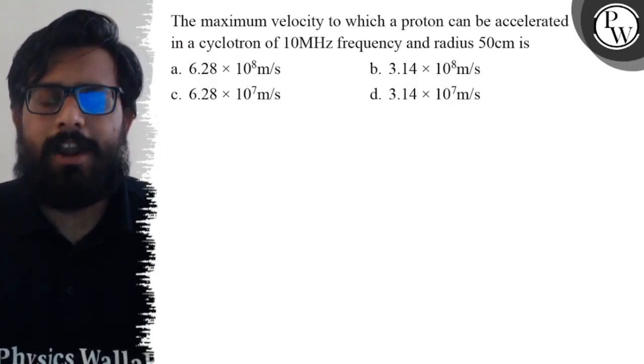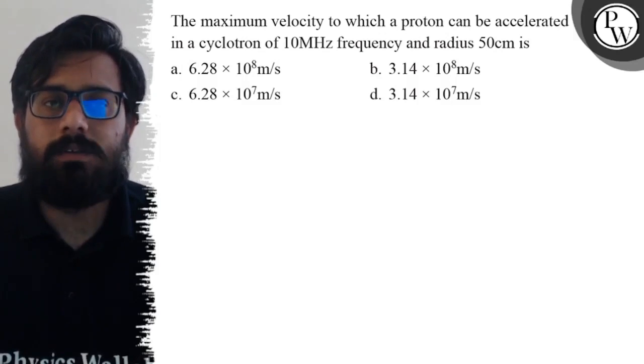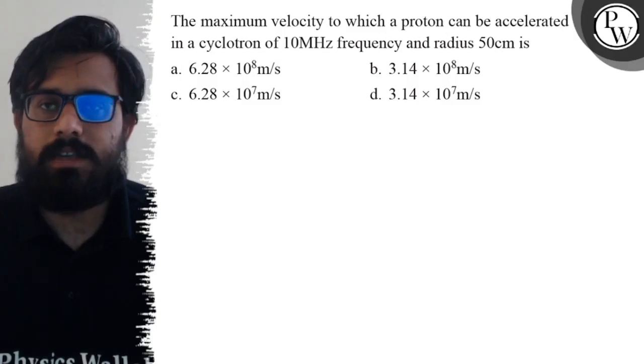per second. The second option is 3.14 × 10^8 m/s. The third option is 6.28 × 10^7 m/s, and your fourth option is 3.14 × 10^7 m/s.